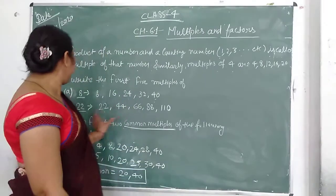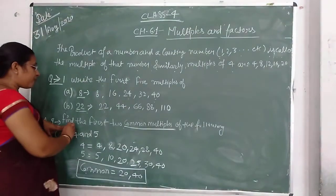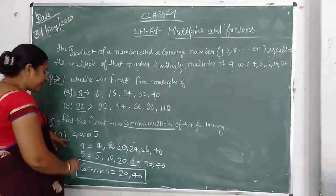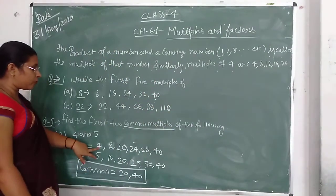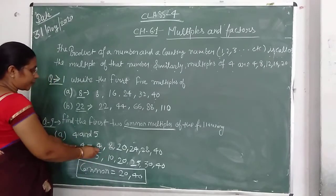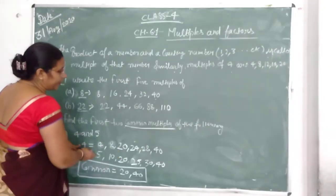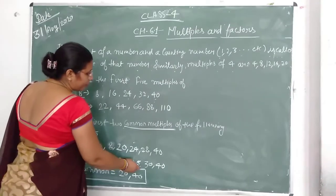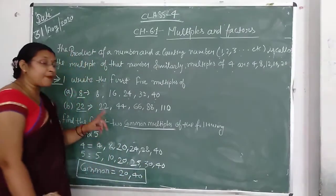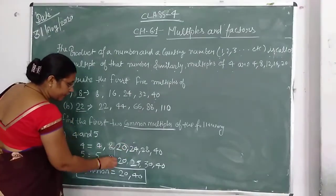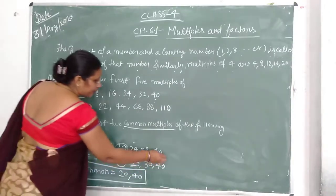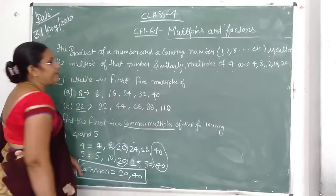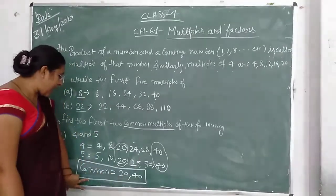Question number 9: find the first 2 common multiples of the following - 4 and 6. Multiples of 4 are 4, 8, 12, 16, 20, 24. Multiples of 6 are 6, 12, 18, 24. So the 2 common multiples are 12 and 24. This is how you find common multiples.